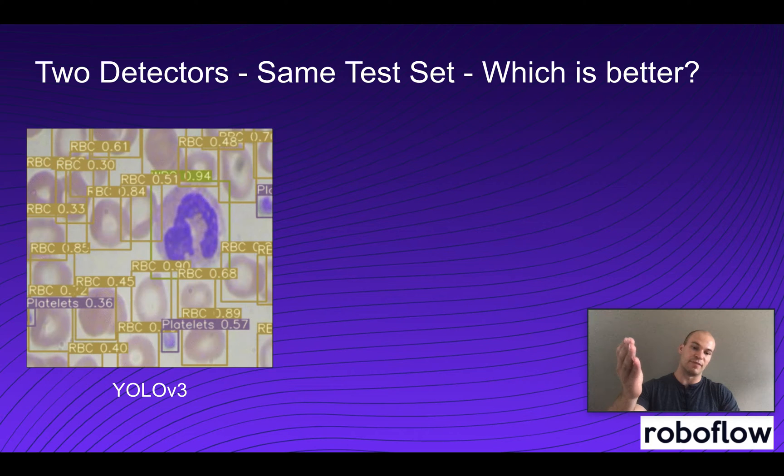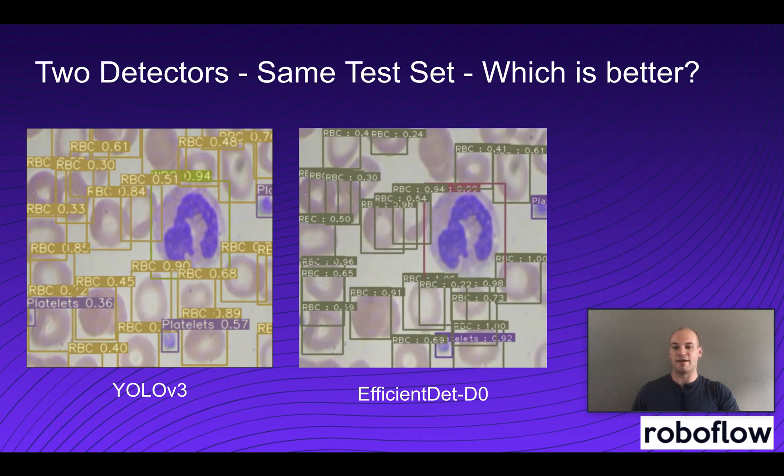So first off, we have a model here, a state-of-the-art model called YOLO v3. And now we have another model right here called EfficientDet d0. And we're holding these up side by side trying to determine which one we want to use.